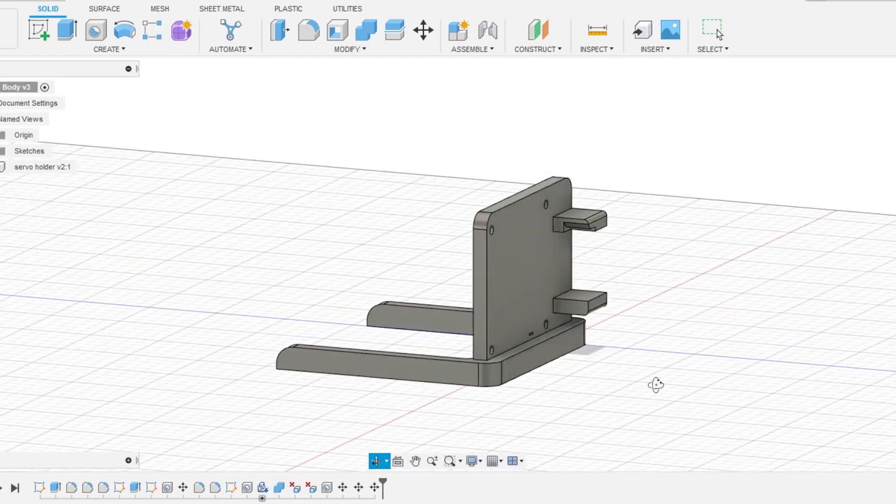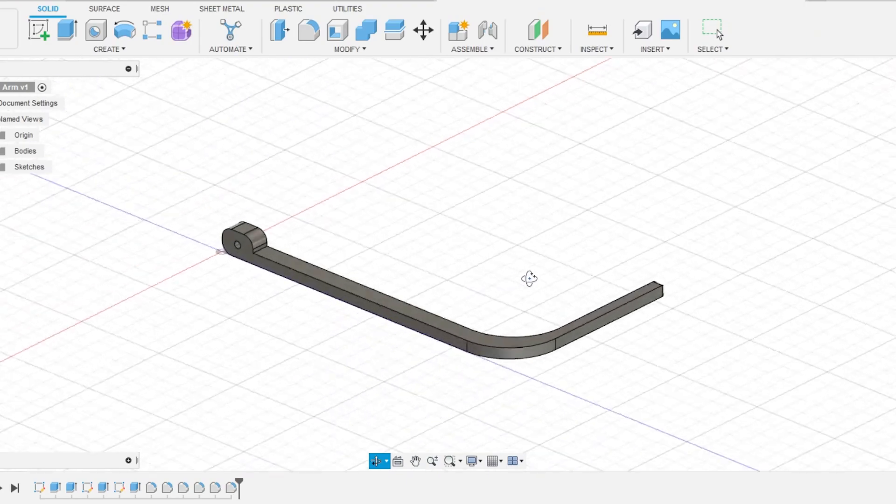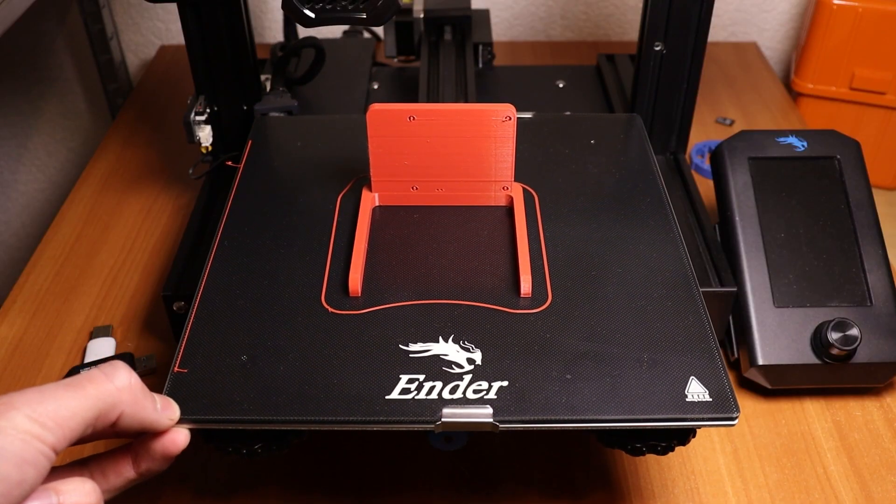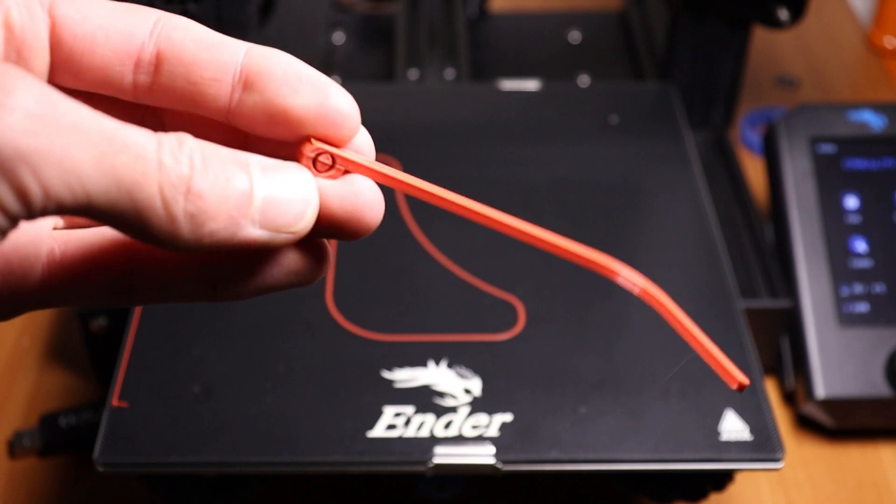Next I used my 3D modeling powers to create two main parts which I also 3D printed afterwards and after cleaning all of the support they were ready for use.